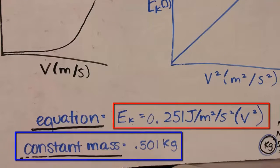With another group, we can see that the mass of their car was, again, about a half a kilogram, and their slope was 0.25 kilograms. And so again, their slope is about one half of their mass.